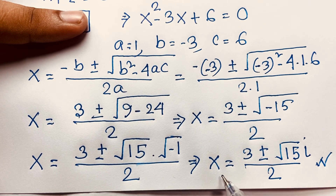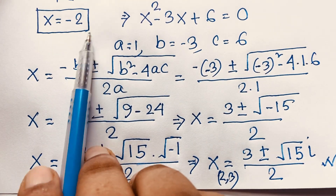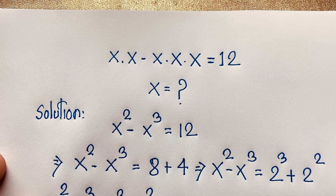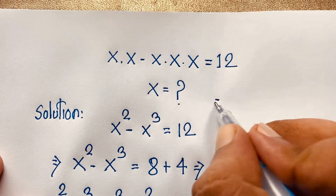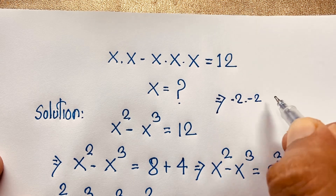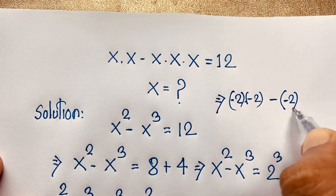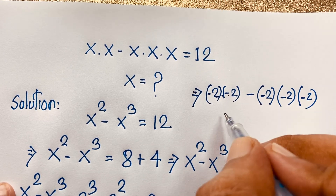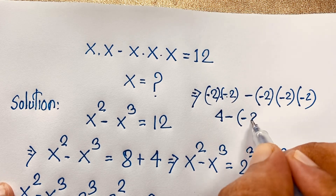Both solutions from the quadratic are complex. Our real solution is x equals negative 2. Let's verify: x squared minus x cubed equals 12. Substituting x equals negative 2: negative 2 times negative 2 equals positive 4, and negative 2 times negative 2 times negative 2 equals negative 8. So 4 minus negative 8... that is 4 plus 8 equals 12. Yes, this is correct — the answer is confirmed.